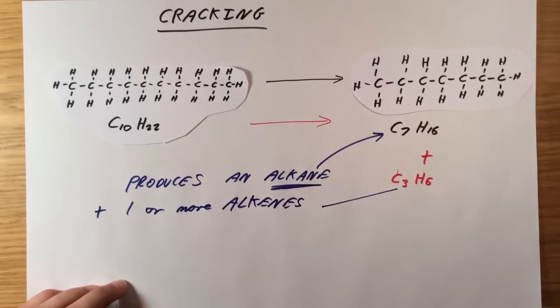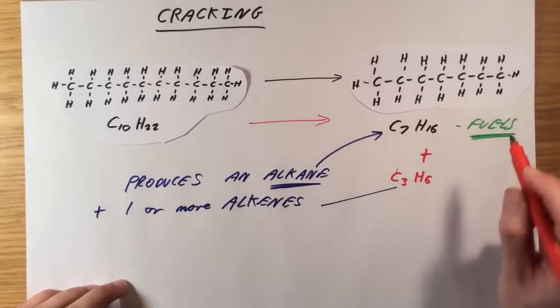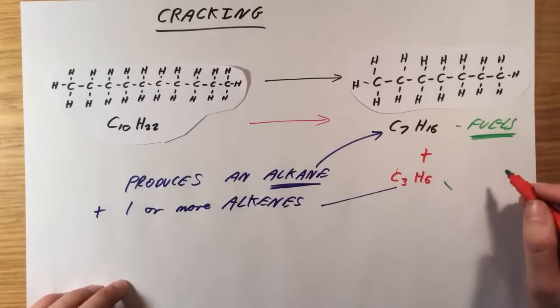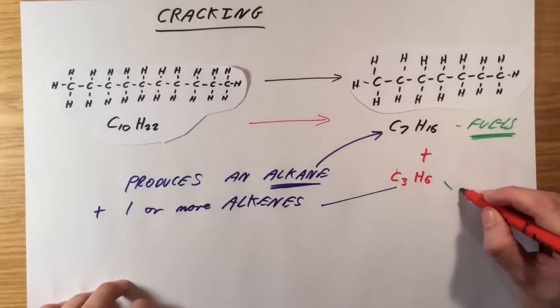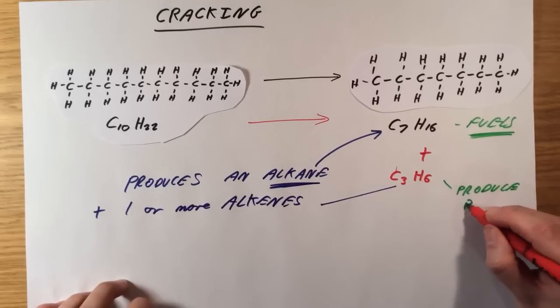So our alkanes are useful as fuels. The alkenes we produce are incredibly useful too. We can use them for all sorts of processes, but one of the key ones is to produce plastics and polymers, which I will look at in the next video.